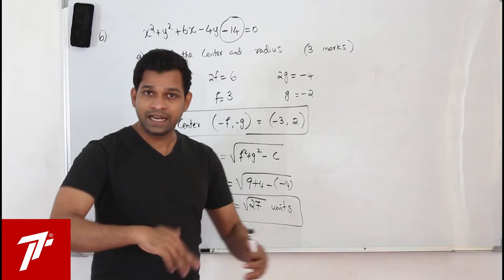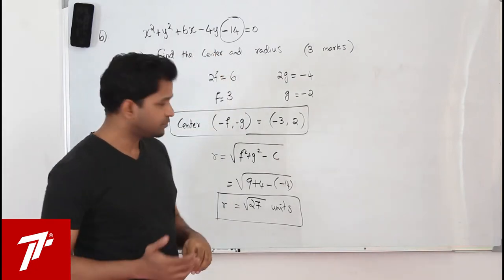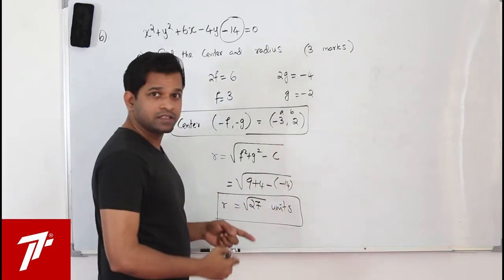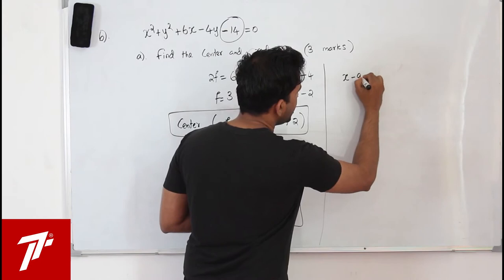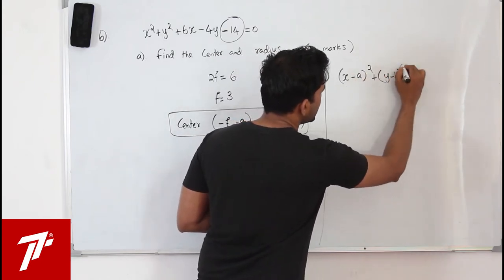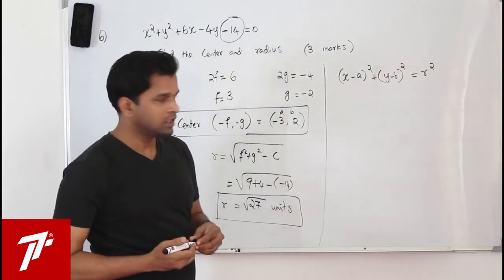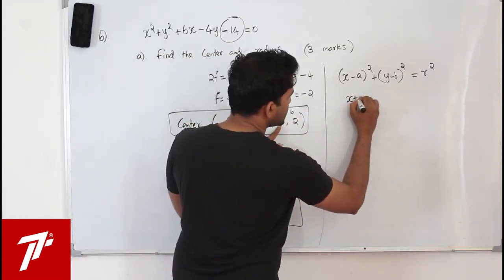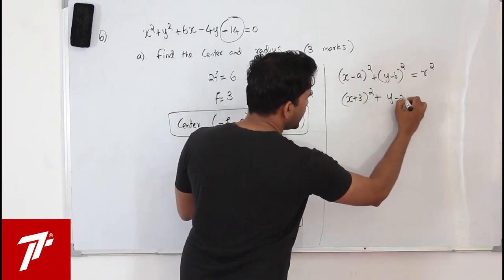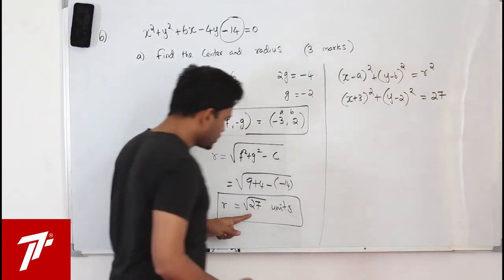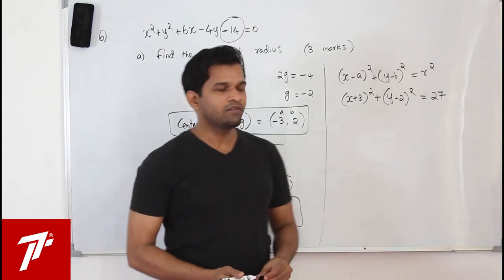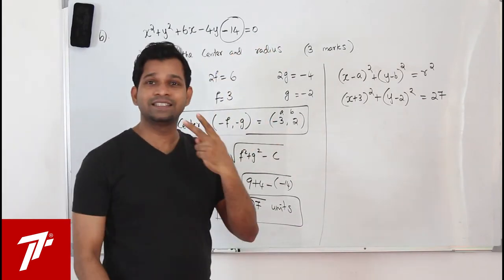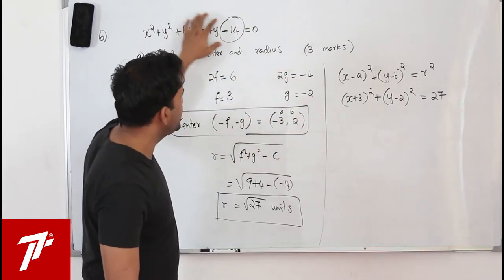If given the center and radius, you can work backwards. Take the center as (a, b); the equation is (x minus a) squared plus (y minus b) squared equals r squared. Substituting a = minus 3, b = 2, and r squared = 27, expanding gives back the original equation — that's the second method.